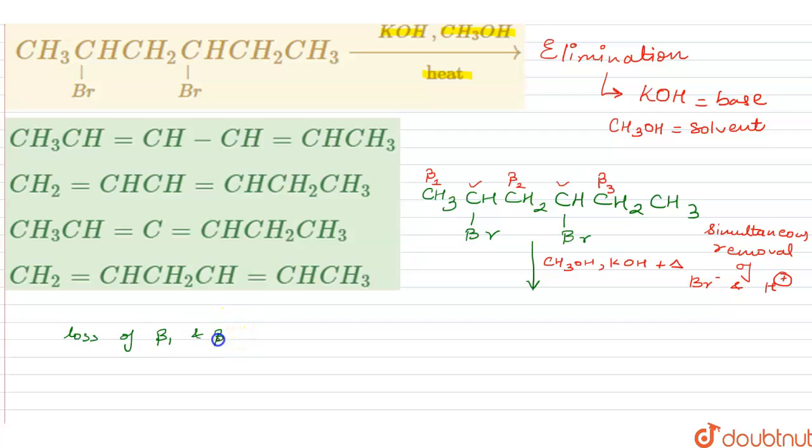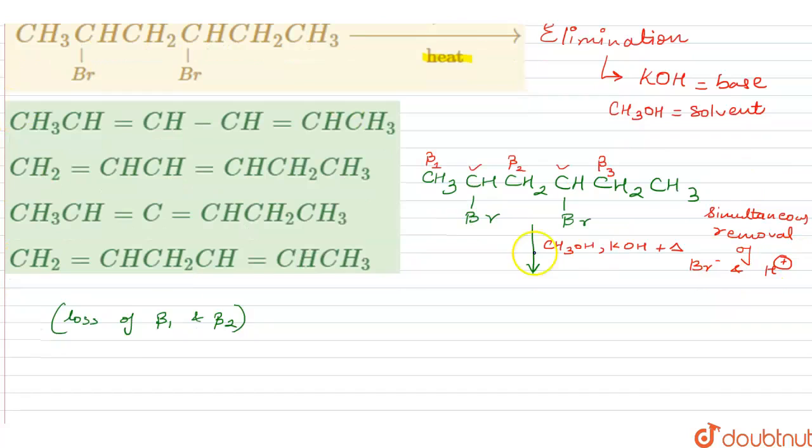The very first alkene which I would be able to sort from this is going to be as follows: the structure would be CH2 double bond CH dash CH double bond CH dash CH2-CH3.